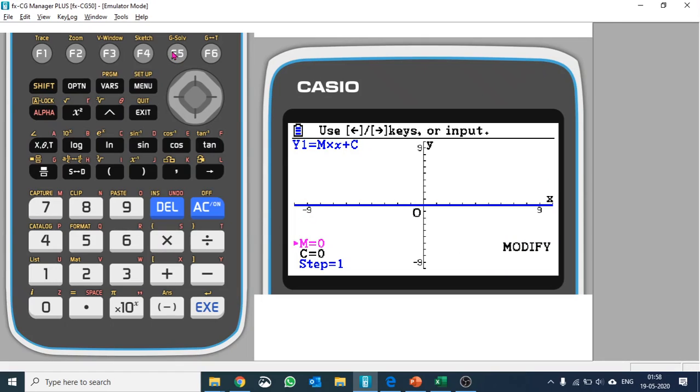Okay, now you see m equals 0 and c equals 0 currently, so it becomes a constant equation y equals 0, which is parallel to the x-axis. Let's change the value of m from 0 to 1.